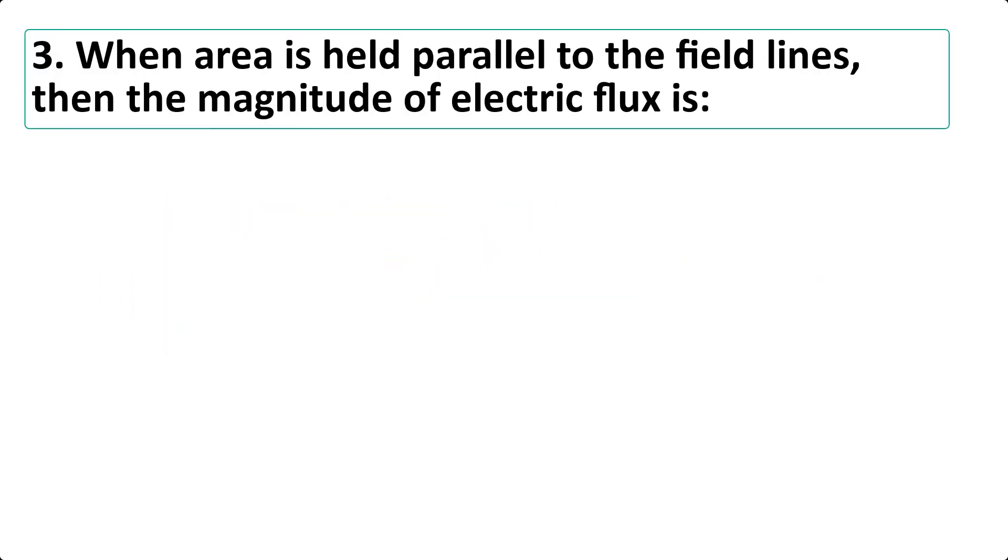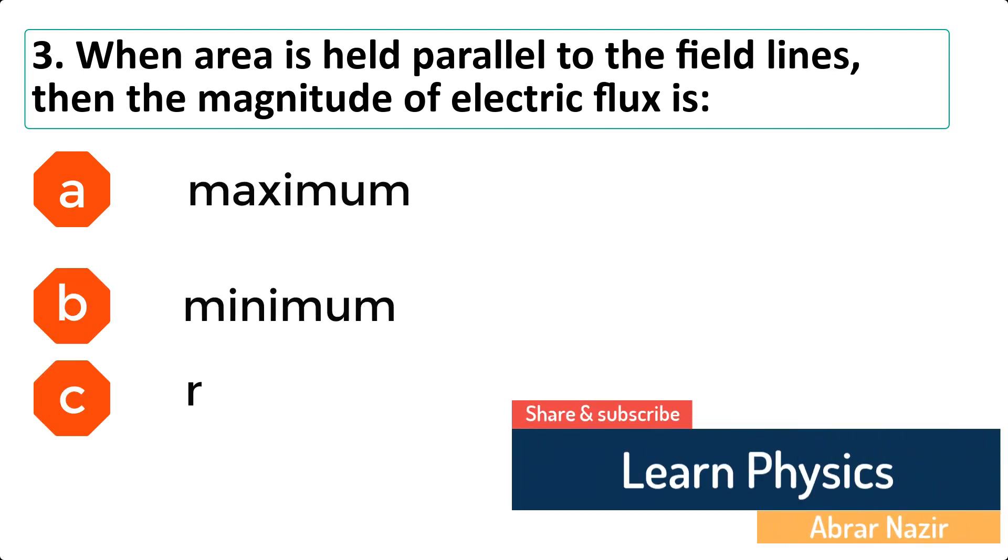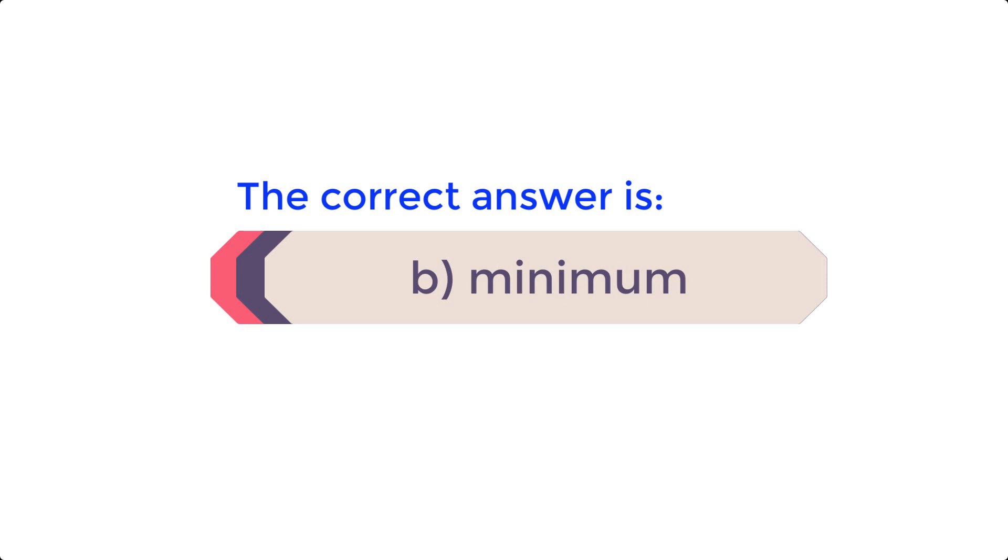Multiple choice question number 3. When area is held parallel to the field lines, then the magnitude of electric flux is: A. Maximum. B. Minimum. C. Negative. D. Either maximum or minimum. The correct answer is B. Minimum.